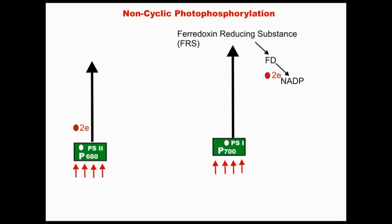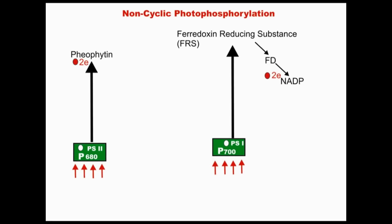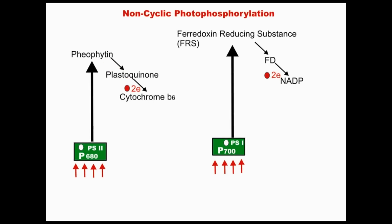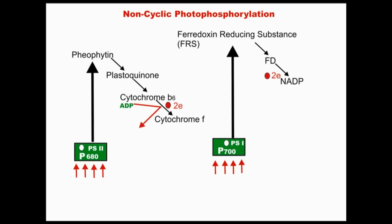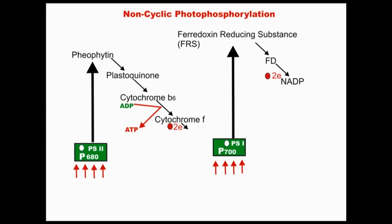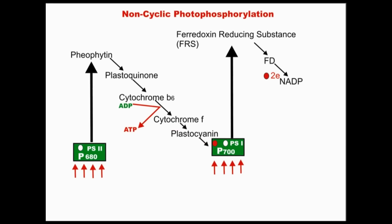Light rays strike photosystem II, which releases two electrons. These electrons are transferred to electron acceptors like pheophytin, plastoquinone, cytochrome B6, and cytochrome F. When electrons transfer from cytochrome B6 to cytochrome F, an ATP molecule is synthesized from ADP. The electrons then transfer from cytochrome F to plastocyanin, and finally fill the electron hole in photosystem I.